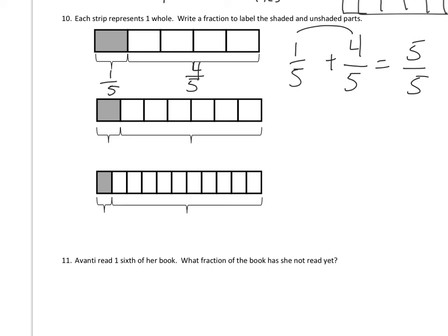Let's look at this one. We have one, two, three, four, five, six, seven pieces — so we know there are seven total pieces. How many of these are shaded? Just that one — one-seventh shaded. And how many are not shaded? One, two, three, four, five, six — six-sevenths not shaded. And again, if you have one-seventh plus six-sevenths, that equals seven over seven. The number of pieces stays the same — you're just adding them up together.